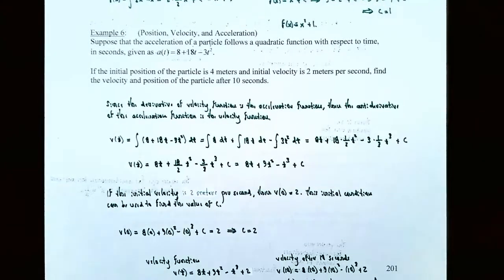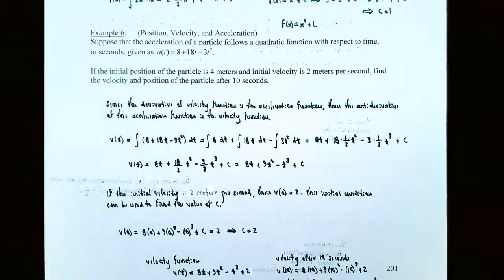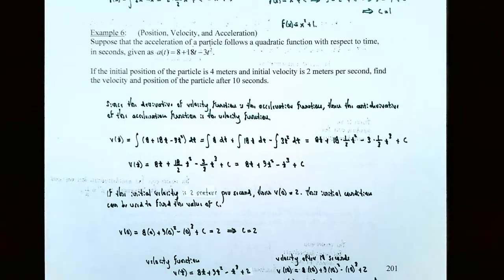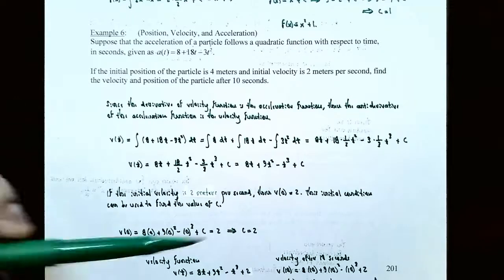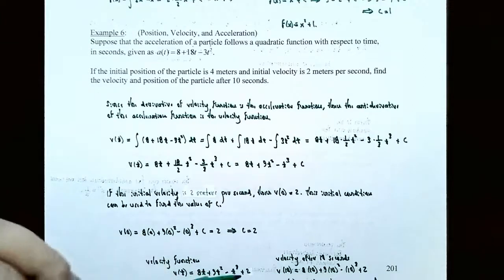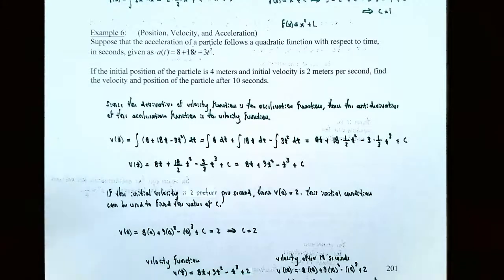Going back to the original problem, they asked for the velocity of the particle after 10 seconds. Now that we know C, we can find that value. v(10) = 8(10) + 9(10²) − 10³ + 2. If you calculate this, v(10) = −18, and the units of velocity are meters per second. So the speed after 10 seconds is negative 18 meters per second.